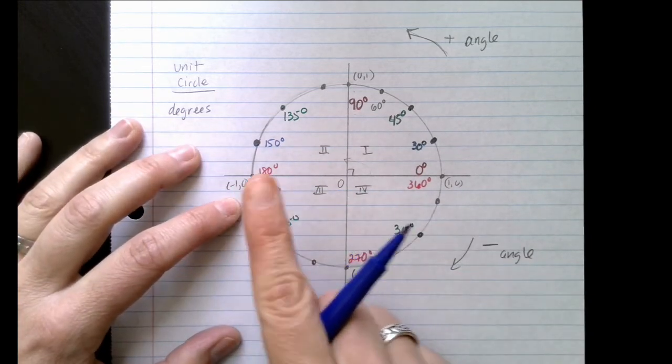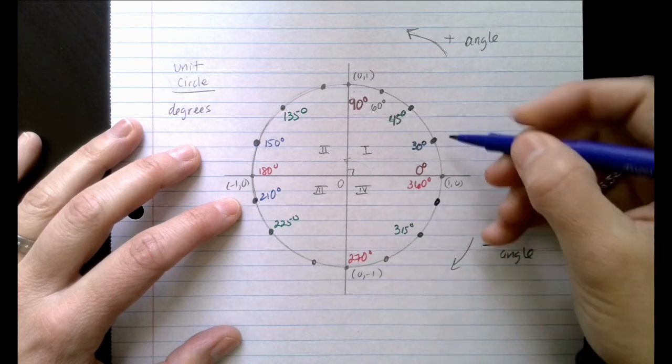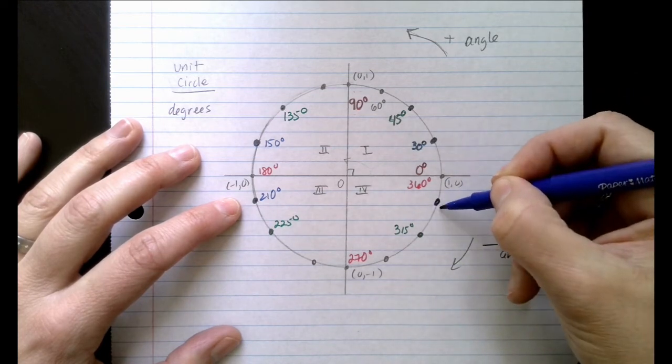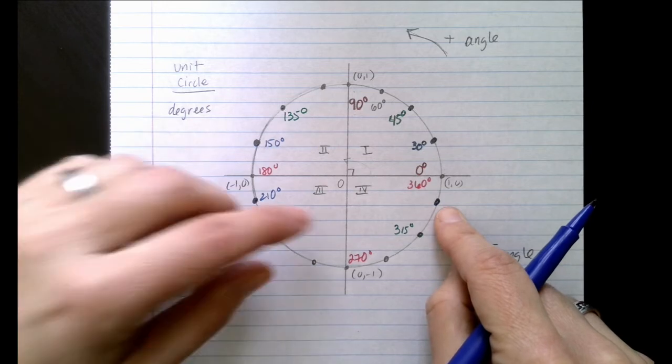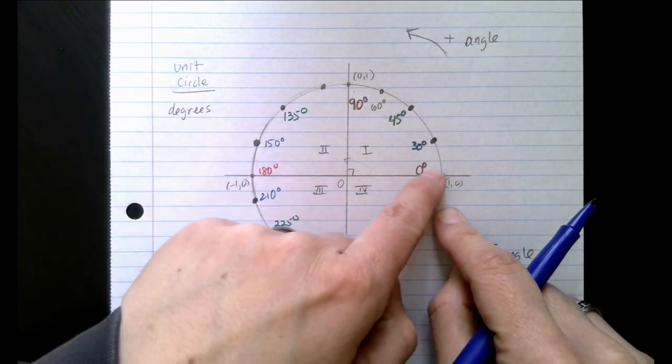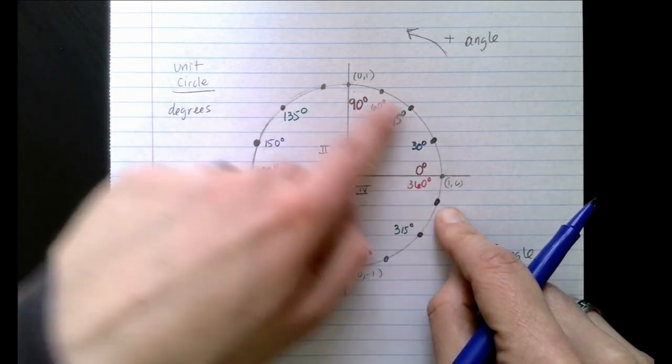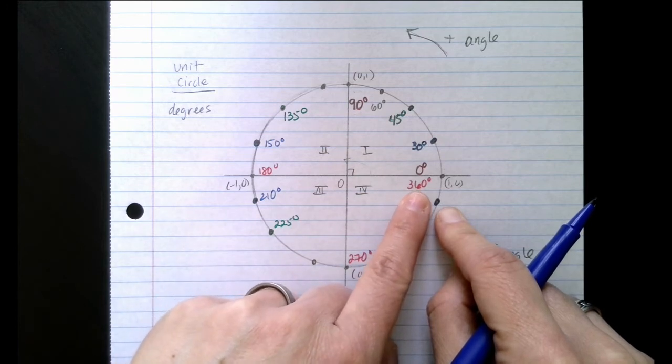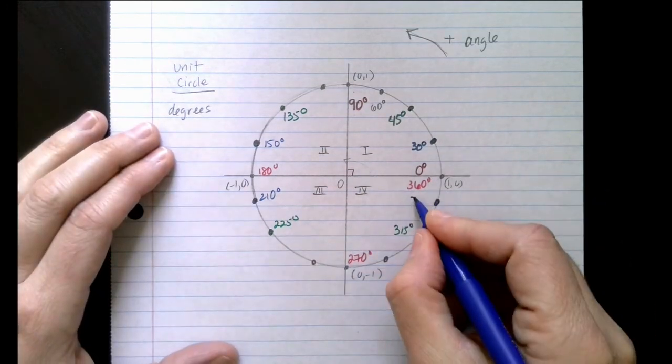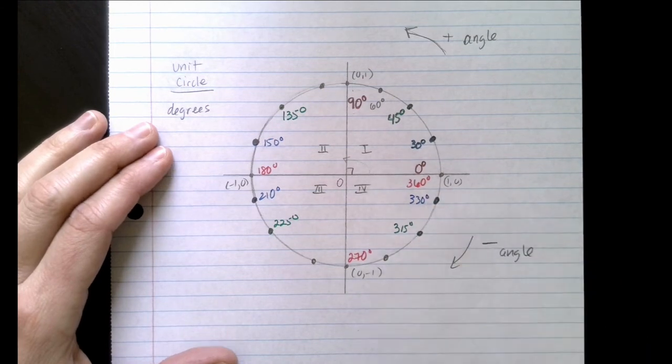If I take this point and reflect over the y-axis, I'm over here. Or you might see this point and reflect over the x-axis, and we're here. So this angle is 30 degrees away from one complete circle, isn't it? Well, one complete circle is 360 degrees. So if I subtract 30, I now have 330 degrees.